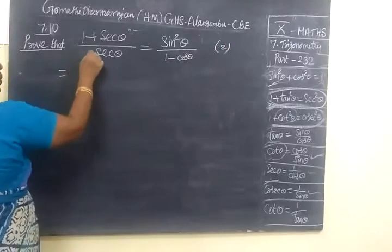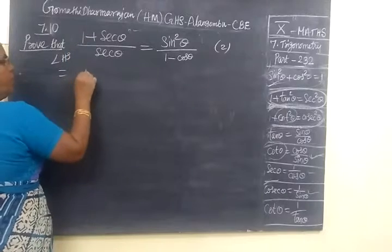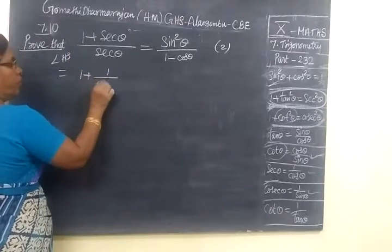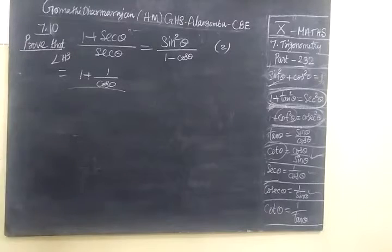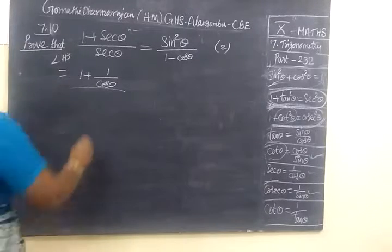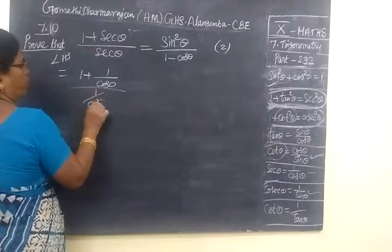Equal to, I am taking the LHS, 1 plus secant theta. If you have known, we know secant theta equal to 1 by cos theta. And denominator also, 1 by cos theta.